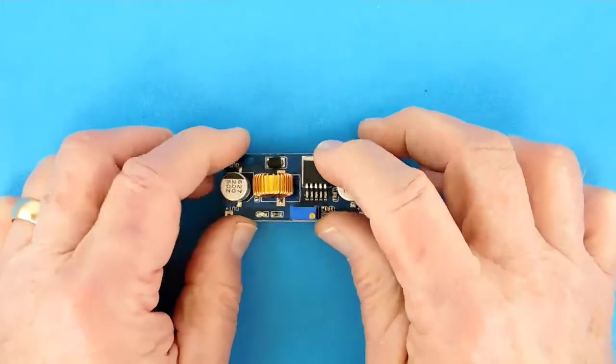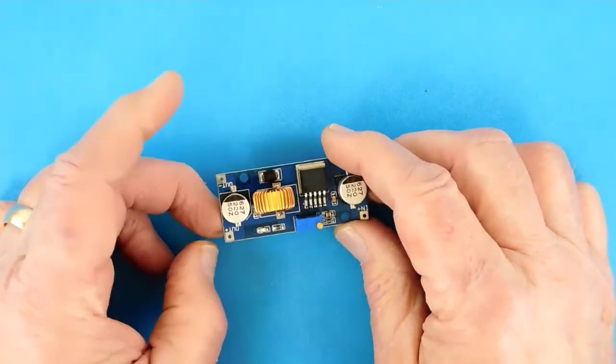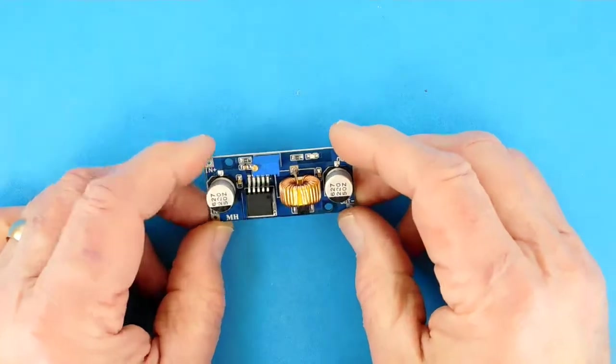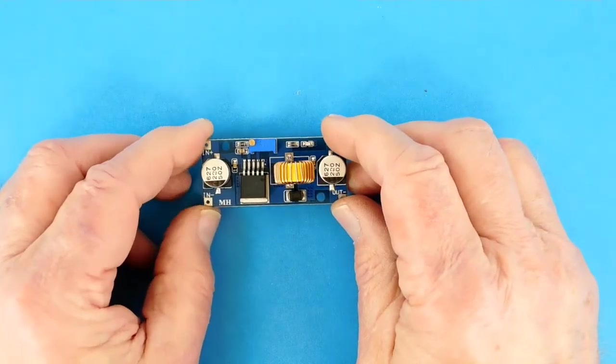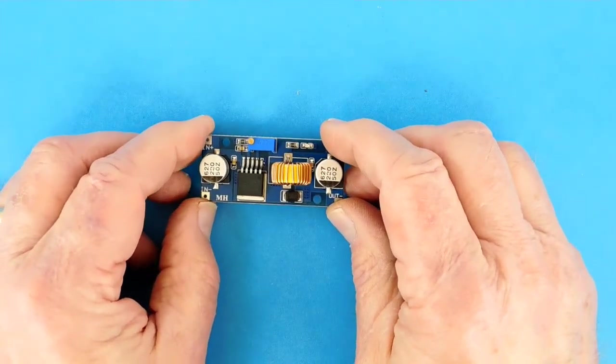This is yet another printed circuit board that I want to show you. This is what's called a buck regulator. Buck meaning it reduces the voltage.